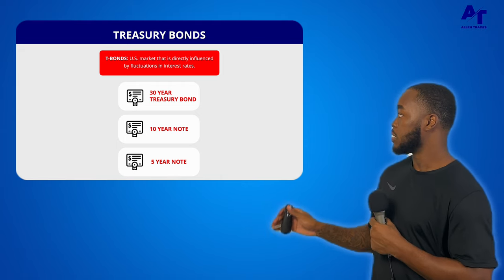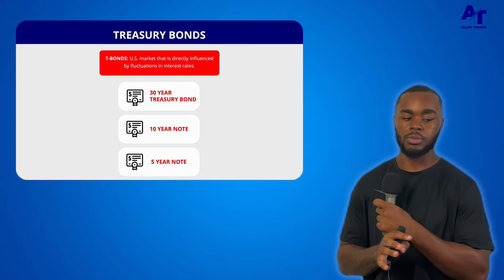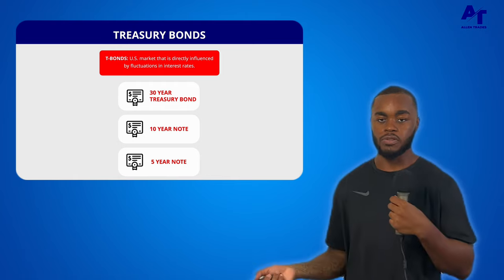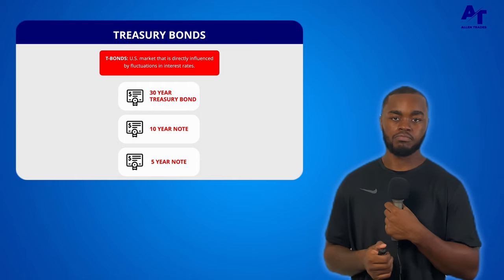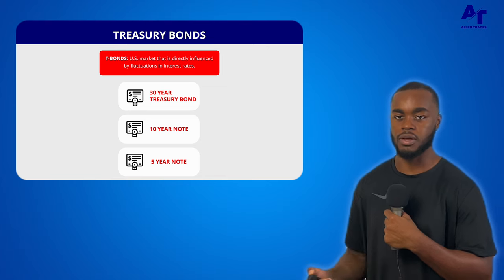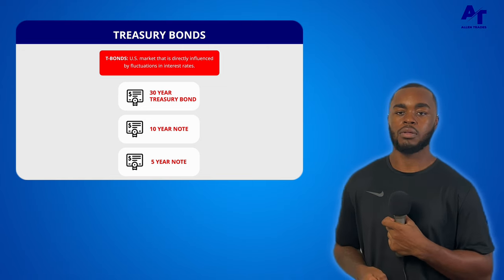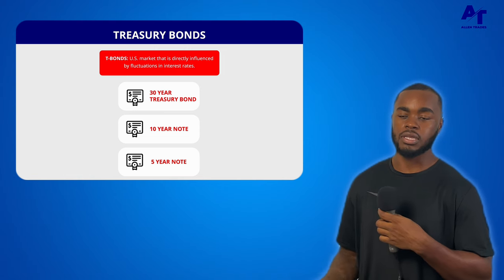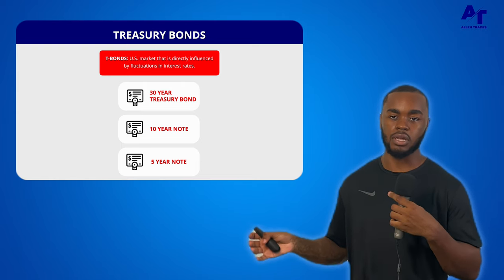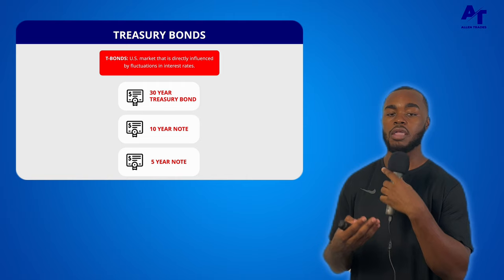Moving on to treasury bonds: there are three bonds we look at — the 30-year note, the 10-year note, and the 5-year note, all in the U.S. market. These are directly influenced by fluctuations in interest rates. You don't need to know all the nitty-gritty fundamentals — just have a general sense of whether interest rates are going up, staying the same, or going down, since that influences how bonds move.